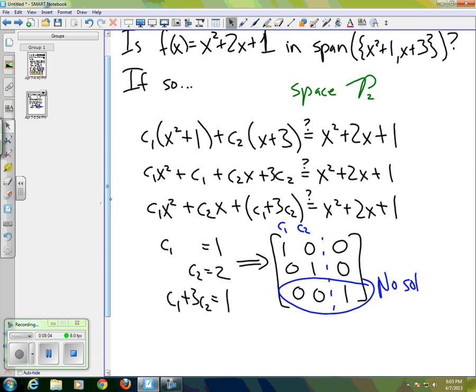So that means that our conclusion, that means that x squared, or f(x), is not in the span of the given set of vectors, or polynomials, which is x squared plus 1, and x plus 3.